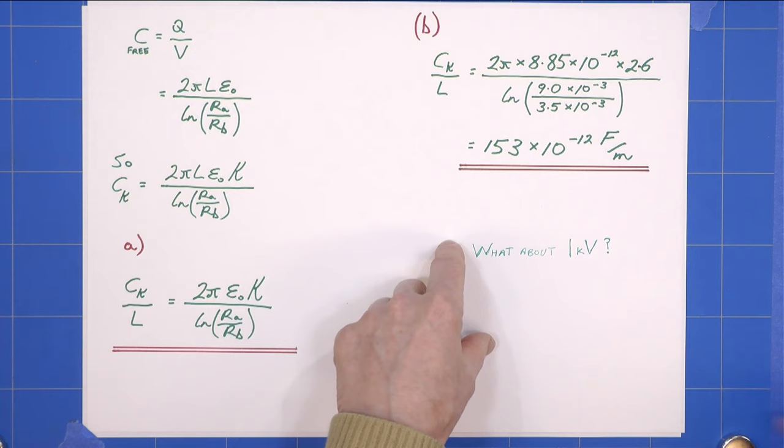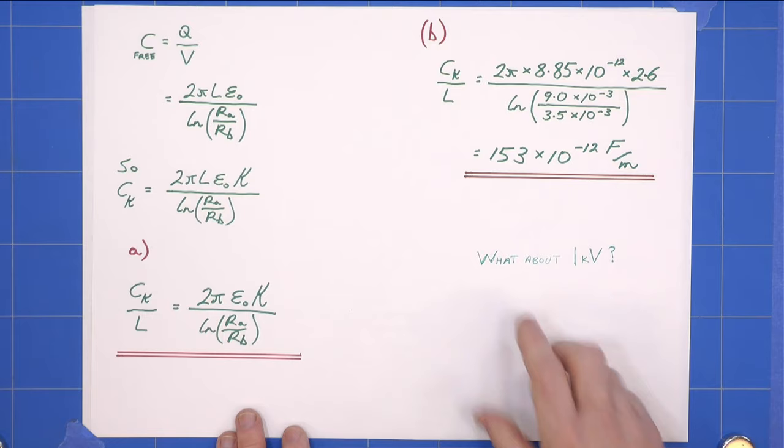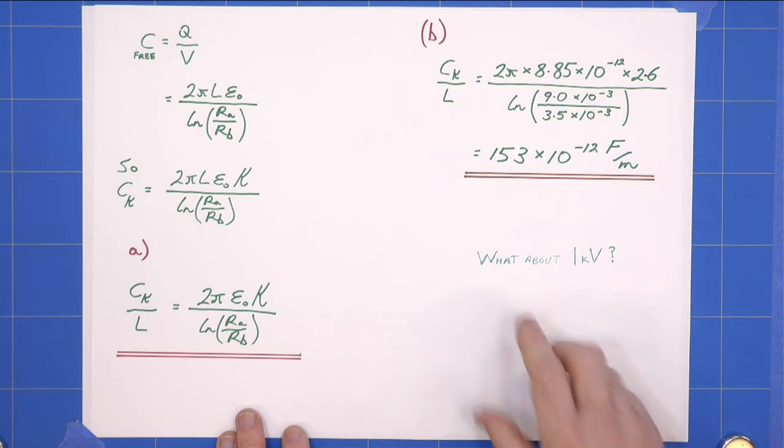And very finally, what about the one kilovolt we were told? Doesn't matter, we don't need it. The capacitance is not dependent on the voltage we apply to the inner conductor. We've got the capacitance, it doesn't vary. Capacitance does not vary with the voltage we apply.